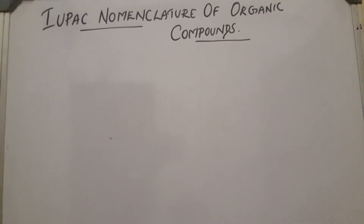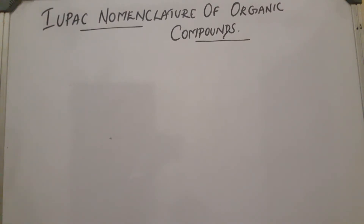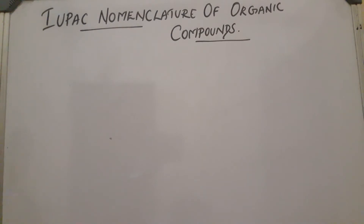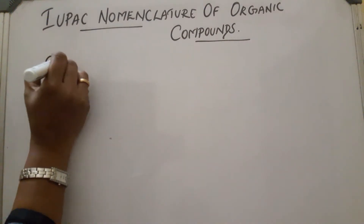Are you facing nomenclature of organic compounds — that means how to name organic compounds? Actually this is a vast topic, so I need three or four classes to complete the whole thing. In earlier times, organic compounds were named in accordance with their origin and particular properties. This naming is called the common name.